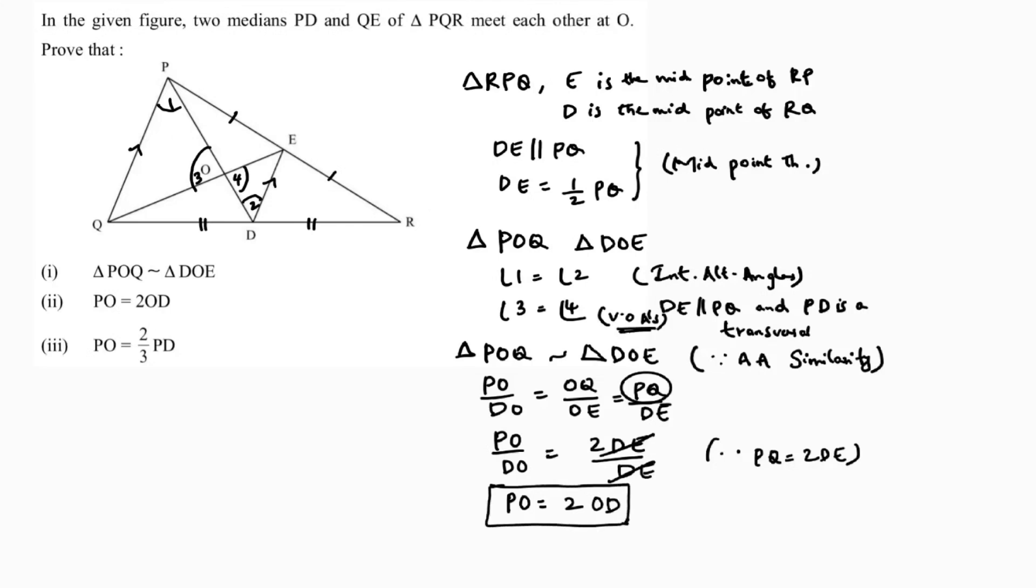For the third part, I need to prove PO is 2 by 3 times PD. When we need the full length PD, write PO by OD equals 2 by 1. Now do invertendo to get the full part: OD by PO equals 1 by 2.